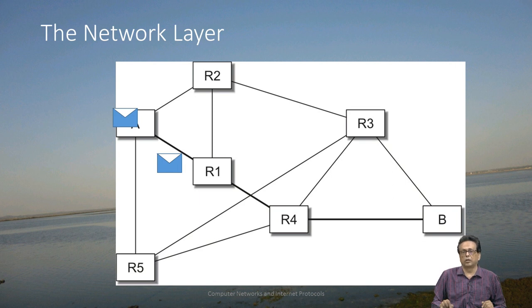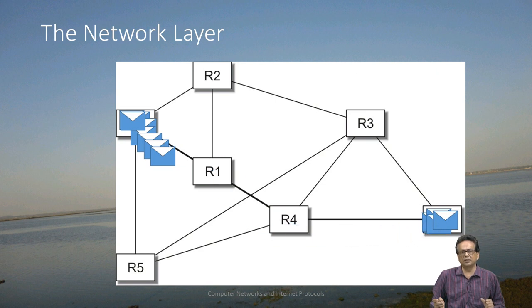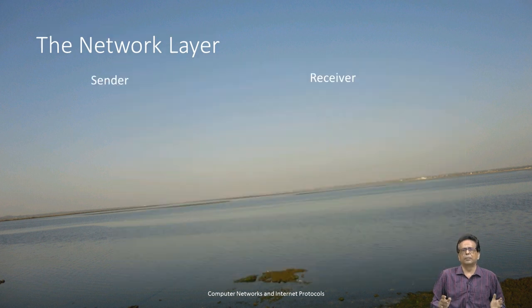The network layer, which runs on top of the data link layer, is very different. There are packets which the sender wants to send, and you can see them traveling across the network through routers R1, R2, R3. Some packets travel on one path and some on another — and who decides this? The network layer decides how the packet will travel and which path it will take. You can see that every packet is taking a different path. At the end, all the packets will have traveled to the other end. That is basically the job of the network layer — to decide the route for every packet.